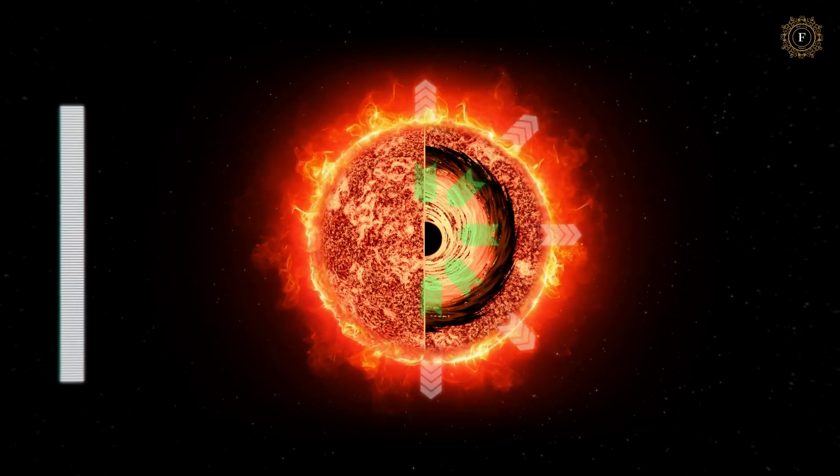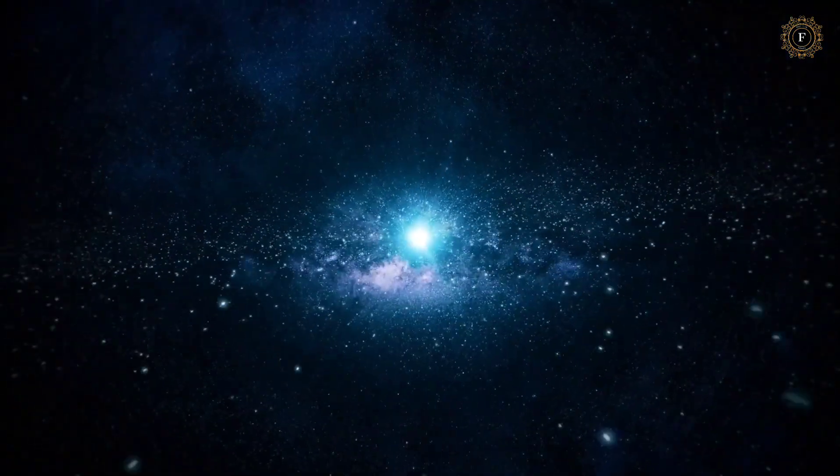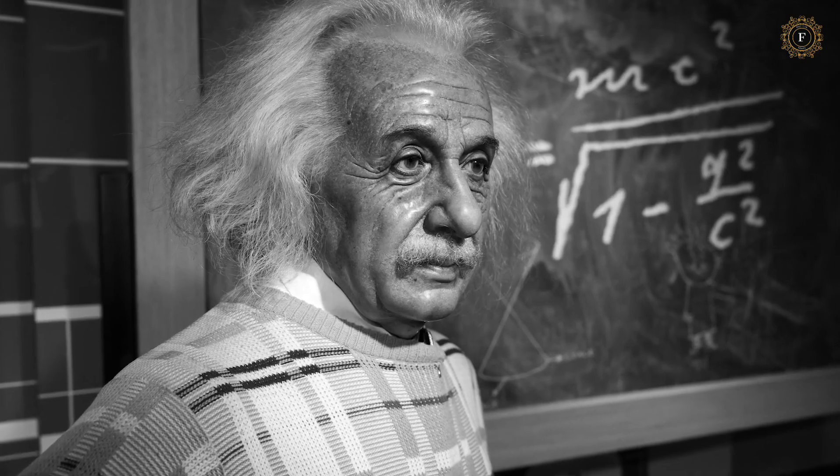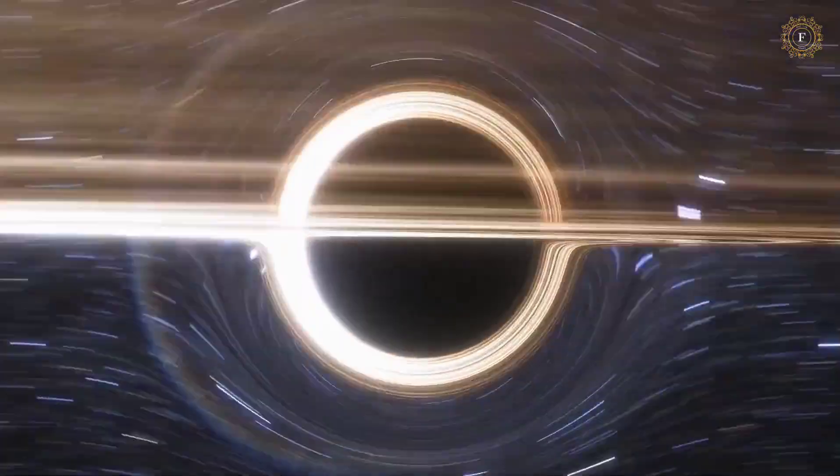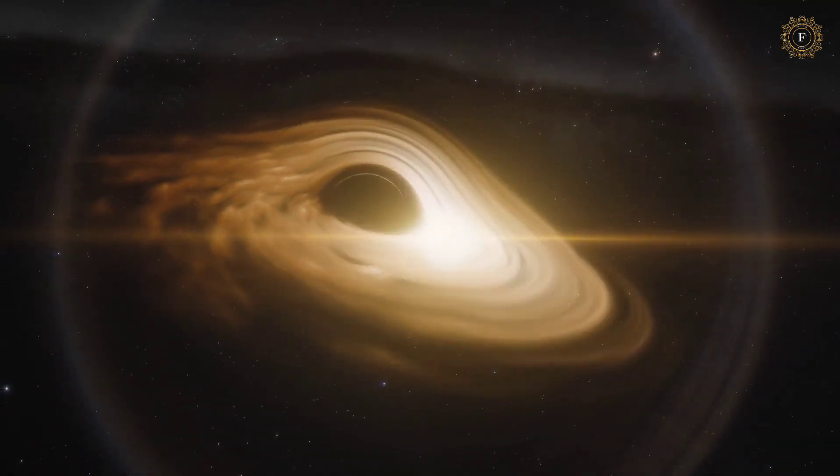Scientists believe that this star was once part of a binary system where two stars orbit each other. As the binary system aged, one of the stars died and became a white dwarf, leaving behind a low-mass companion star that was able to provide enough carbon and oxygen to keep the white dwarf alive.